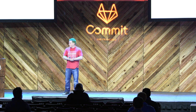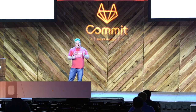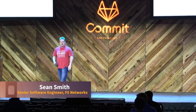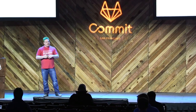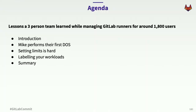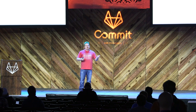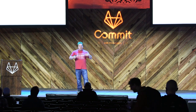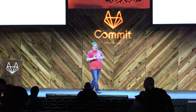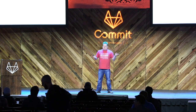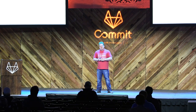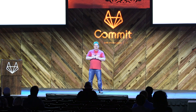Good afternoon, everybody. We're going to be going over best practices for Kubernetes runners. These are lessons that a three-person team learned while managing GitLab Runners for around 1,800 users at F5 Networks. We'll go over an introduction, a bit about myself, F5 Networks, our install, and then we'll go over Mike and the DOS he performed. It could have happened to anybody, but Mike is our lucky volunteer.